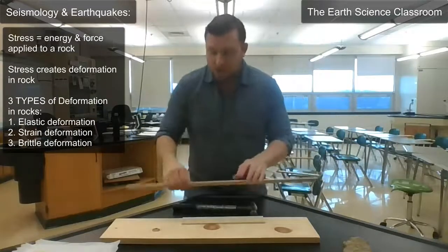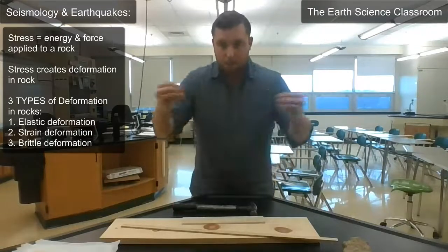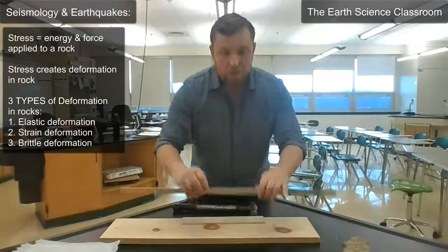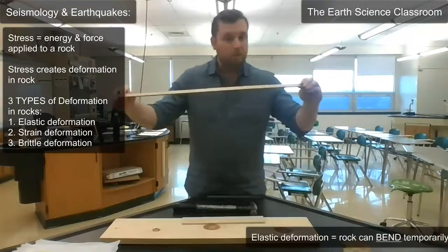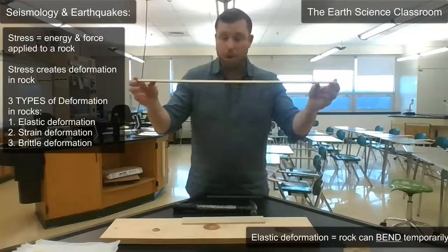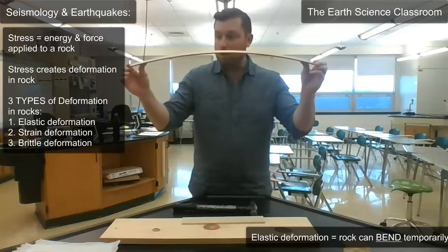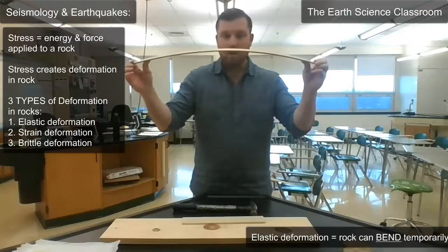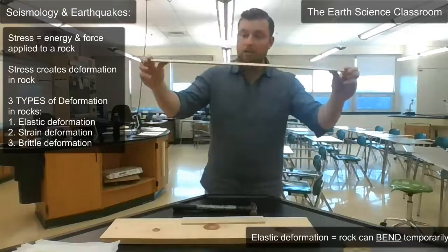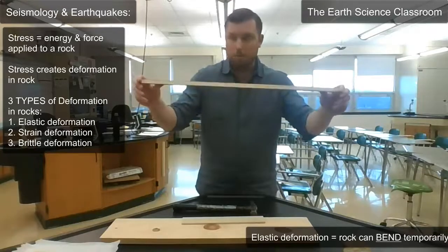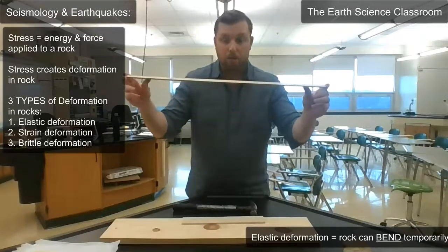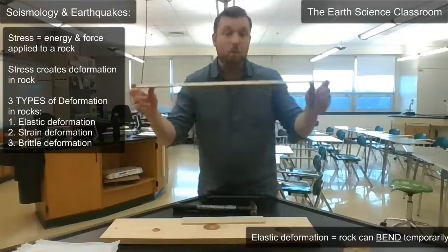First is elastic. Think of an elastic band — how it moves and stretches and then comes back to its original position. If I apply stress to this piece of plywood and bend it, when I let go it comes back to its original position. So I bend it, it changes shape temporarily, and then comes back to normal. That's elastic. I'm applying force with my thumbs on this piece of plywood, applying stress. That happens in the earth's crust — it bends, and when you release the stress it comes back.